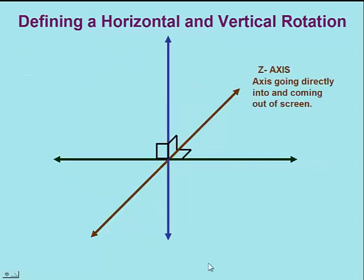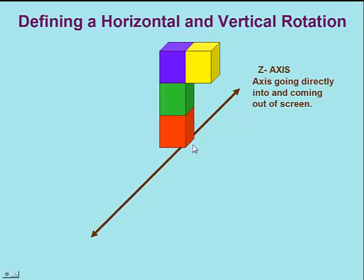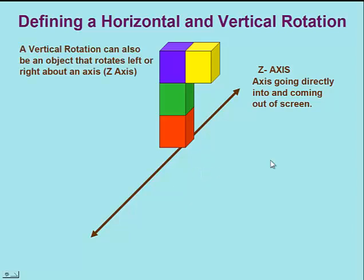We can also do rotations around what is known as the z-axis when we're doing three-dimensional graphing. The z-axis would be an axis that would go into and come out of this screen. We'll call this a vertical rotation as well, but this time we'll say we're rotating it left or right.